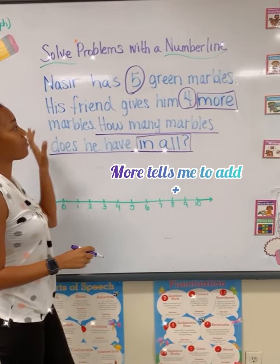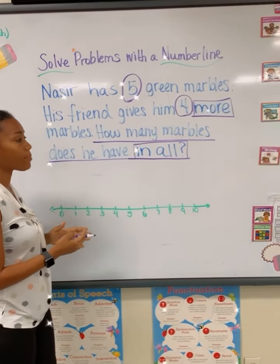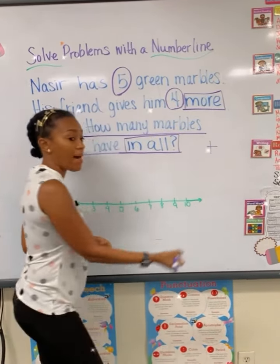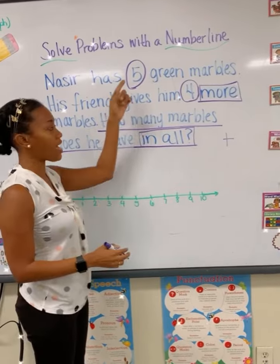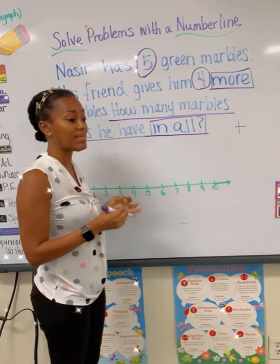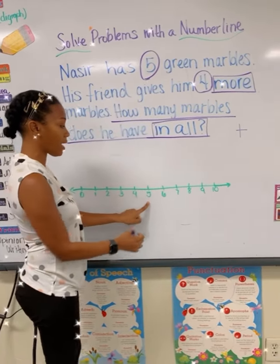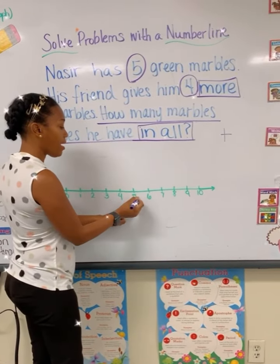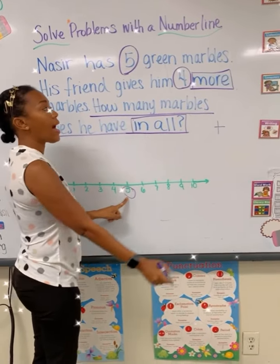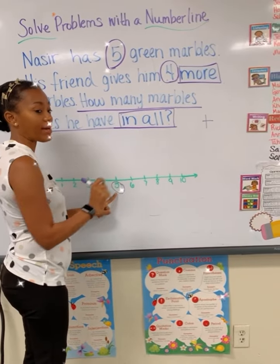Now that we have dissected the word problem, we need to use these numbers on the number line. Because my operation is addition, does it matter if I start with the number five or the four? No, it doesn't. It's still going to come out to be the same sum. So I'm going to start with the number five on the number line. I'm going to circle the number five so I know where I'm going to start.